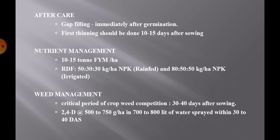Apply the full dose as a basal in case of rain-fed condition. While in case of irrigated, apply half dose of nitrogen and full dose of P and K as a basal dose at the time of sowing, and the remaining half dose of nitrogen as a top dressing after 30 days of sowing.